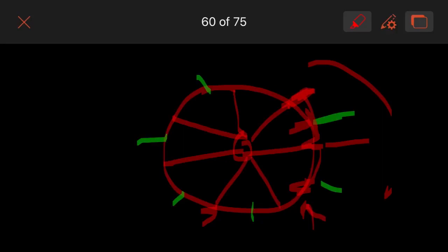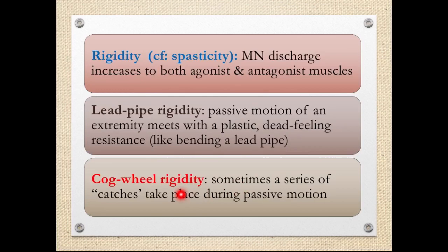To illustrate: in lead pipe rigidity, when you passively flex a person's arm, you feel resistance throughout the entire range of motion. In cogwheel rigidity, you start with initial resistance, then a slight release, then resistance again, then release — a ratchet-like feel. In parkinsonism, cogwheel rigidity is the main type, though lead pipe rigidity can also occur.